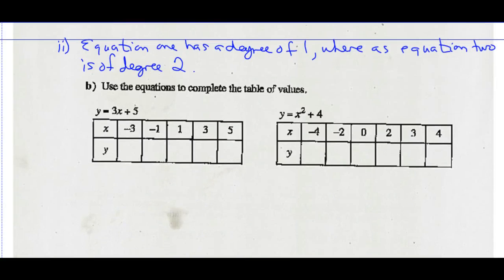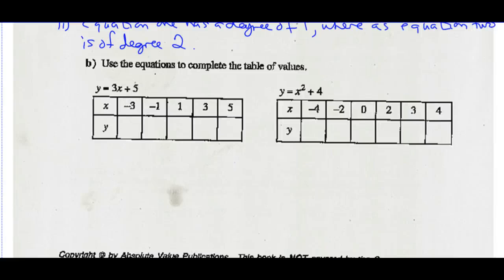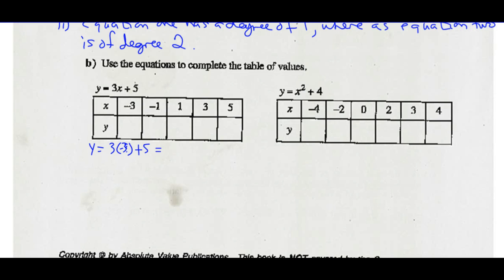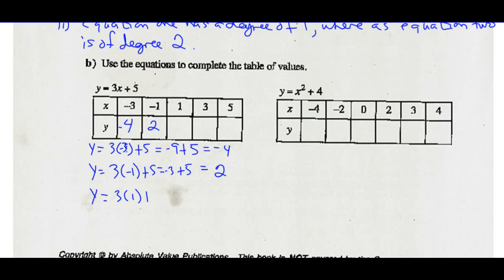Use the equation to complete the table of values below. We're simply substituting the value of X into the equation and solving for Y. So Y equals 3 times negative 3 plus 5, which is negative 9 plus 5, which is negative 4. When X is negative 1, we substitute negative 1 in: 3 times negative 1 plus 5, which is negative 3 plus 5, which is 2. When X is 1, we substitute 1 in: 3 times 1 plus 5, which is 3 plus 5, which is 8. And 3 times 3 is 9 plus 5 is 14, and 5 times 3 is 15 plus 5 is 20.